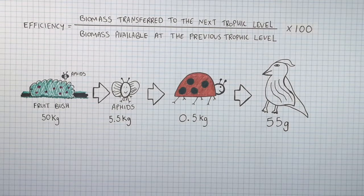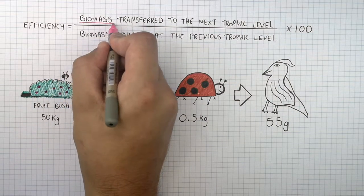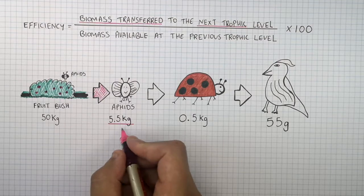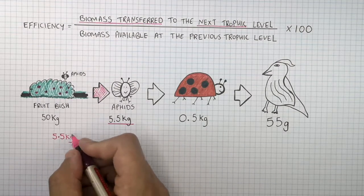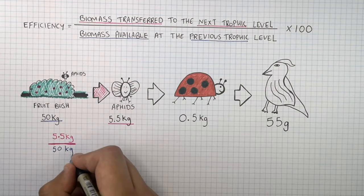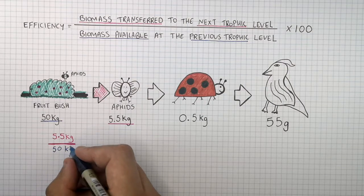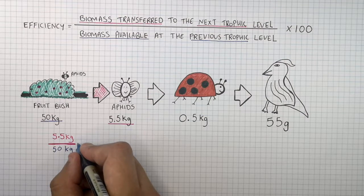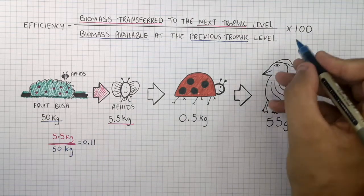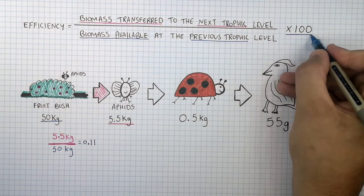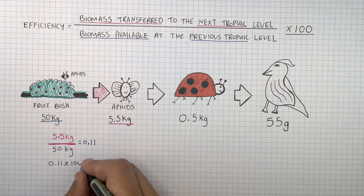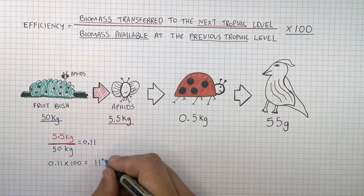To work out the efficiency of energy transfer between trophic levels, you need the biomass transferred to the next trophic level. In this case the aphids have a biomass of 5.5 kilograms, so you do 5.5 kilograms divided by the biomass available at the previous trophic level, which is 50 kilograms stored in the fruit bush. This equals 0.11, and multiplying by 100 gives 11% efficiency between the fruit bush at the first trophic level and the aphids at the second trophic level.